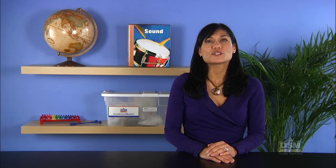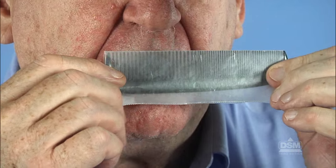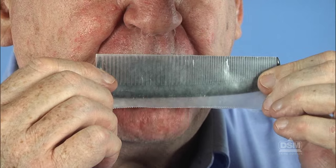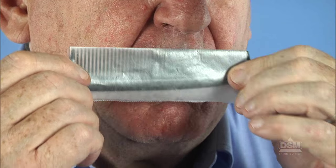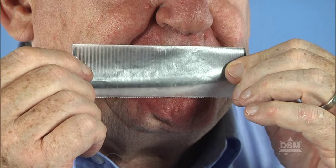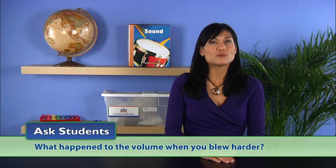Next, give each student a comb and a piece of waxed paper and a strip of plastic. Instruct the students to cover the comb with the waxed paper. Have them hum and blow gently on the waxed paper. Then have them hum and blow hard. Ask students, what happened to the volume when you blew harder? When they blew harder, the volume increased.